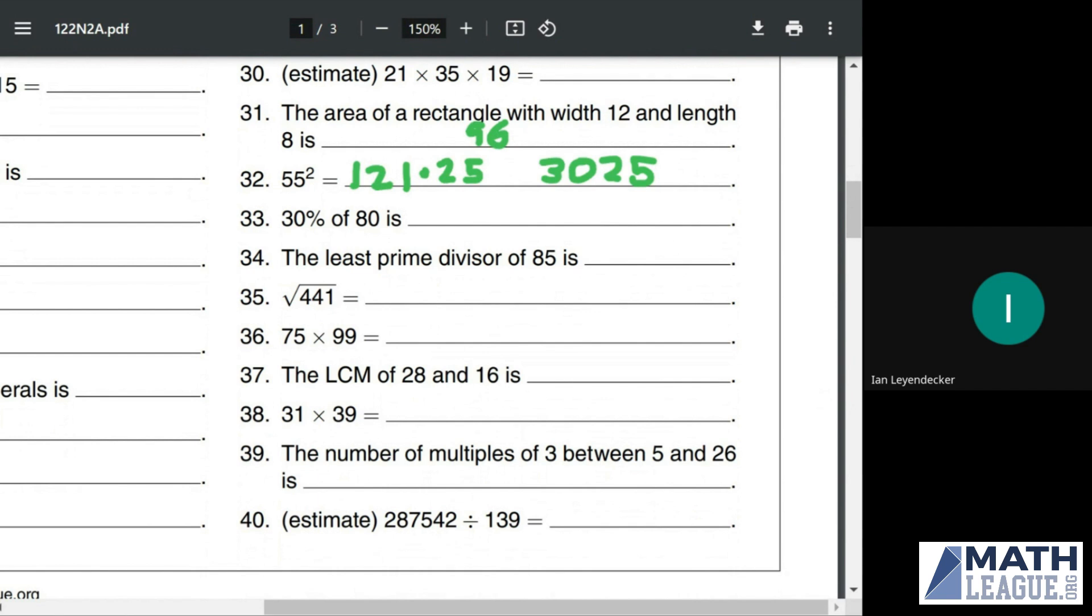30% of 80 is blank. Well, 30% is 3 tenths. 1 tenth of 80 is 8, so 3 tenths is 3 times 8 or 24.